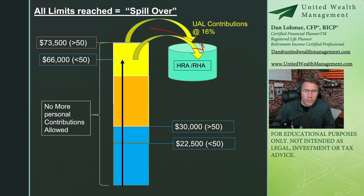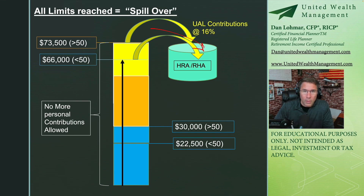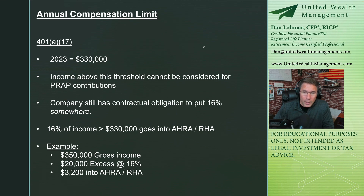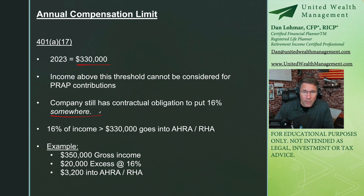On my next video I'll show this using a graphical calculator with a couple of examples of what these contributions look like and when the limits get reached throughout the year. Besides spillover, there's also the annual compensation limit. Annual compensation above $330,000 cannot be considered for contribution to a 401(k), but the company is still obligated to make a 16% contribution somewhere. So they take that 16% of compensation above $330,000 and put it into the active HRA or the RHA — that's another way it gets funded.